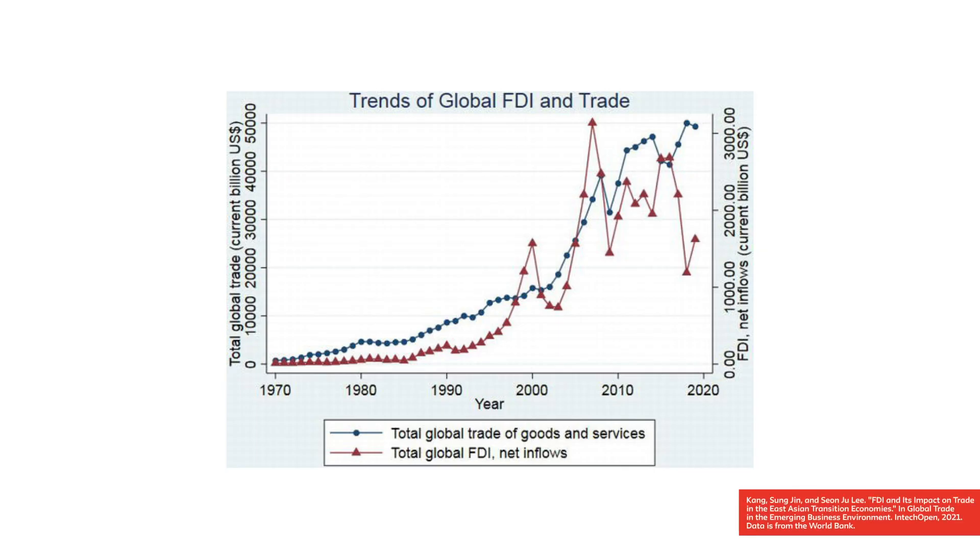The first driver of this second wave of globalization is the liberalization of trade and investment. As we saw in the previous lesson, international trade and foreign investment have surged since the 1980s. This was due to a conscious strategy by governments who decided that economic development could be led by successful export performance. This strategy of export-oriented industrialization led governments to support more liberalized trade and to promote their export sectors of the economy.